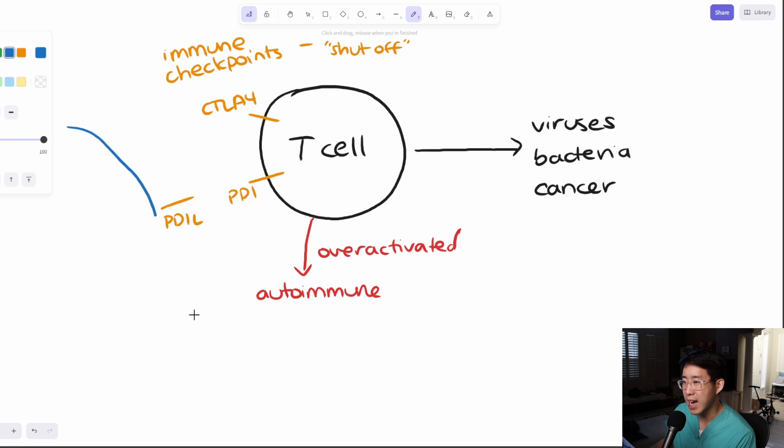The problem is that cancer cells become very smart. And a lot of times they can actually start producing things that will bind these receptors and effectively knock out the T cell. So they will bind here, they'll bind at all these places and turn off the T cell.